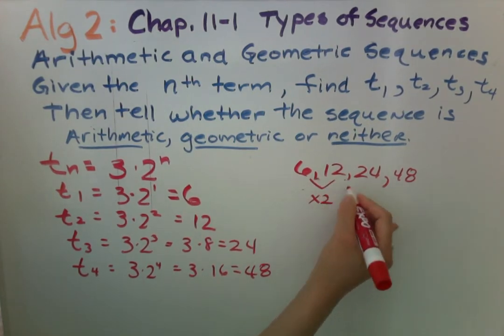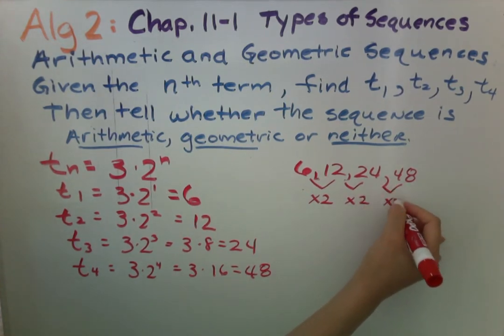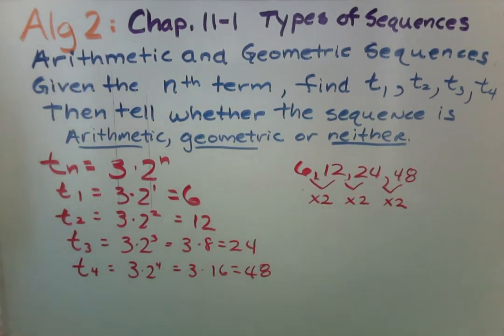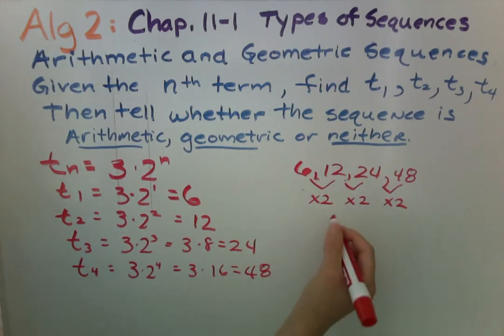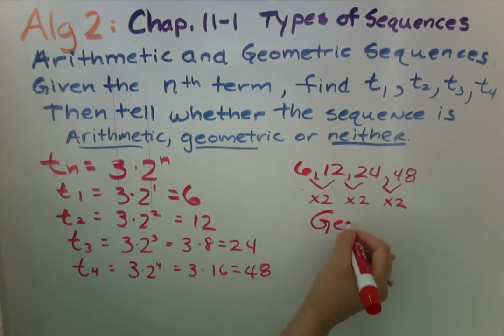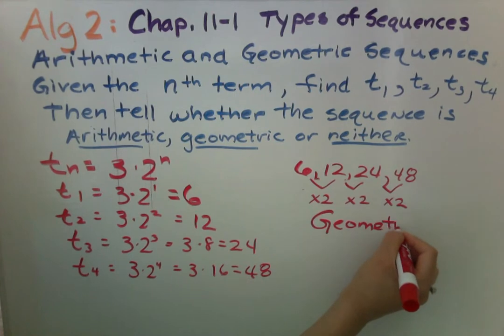We get 12, 12 times 2 gives us 24, 24 times 2 gives us 48. So we have found our pattern. Therefore this is a geometric sequence.